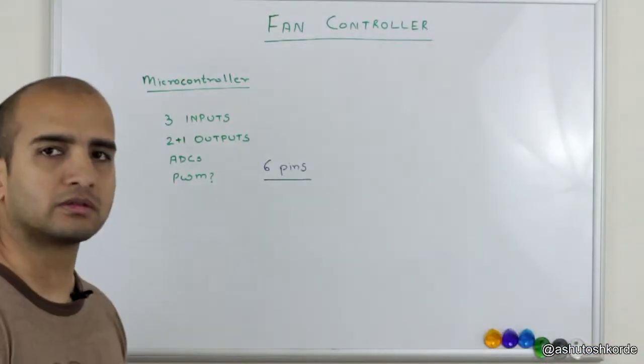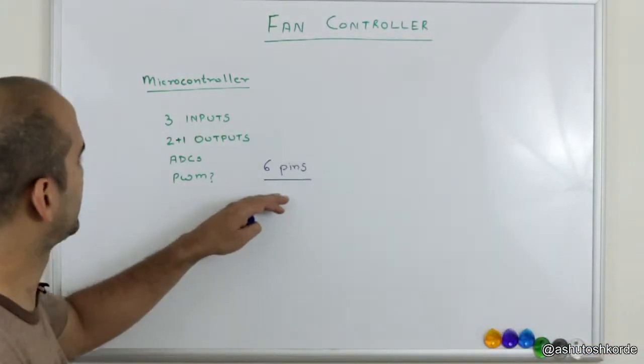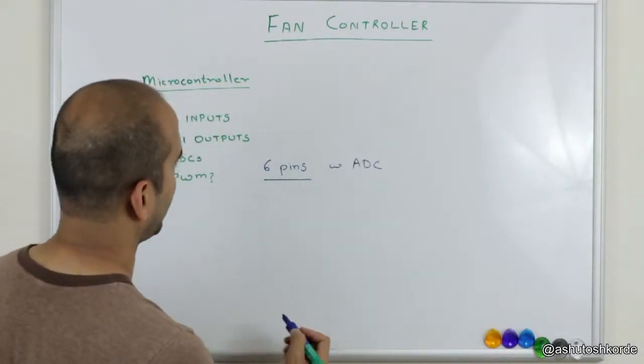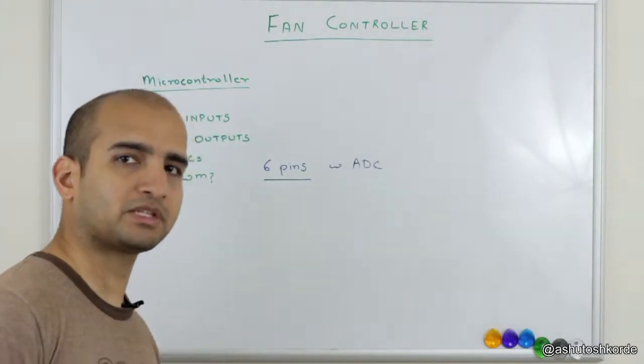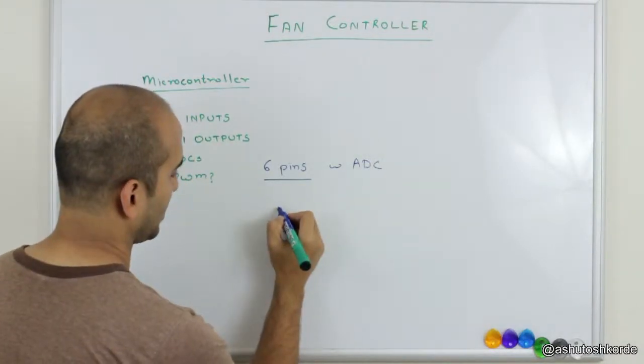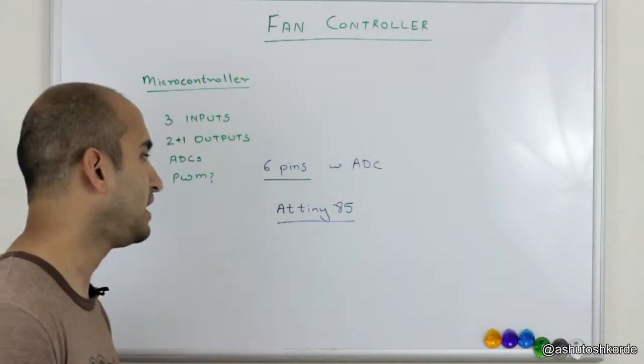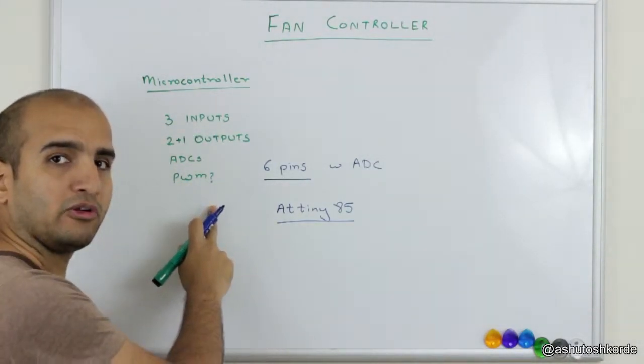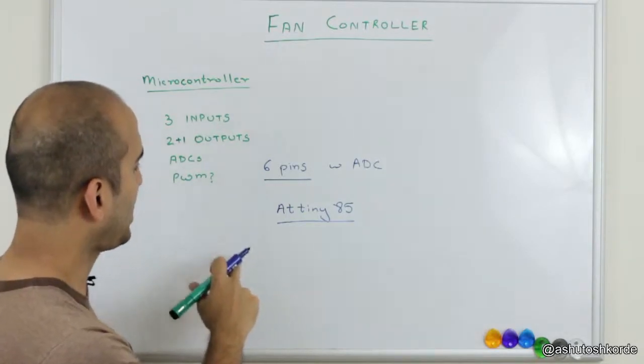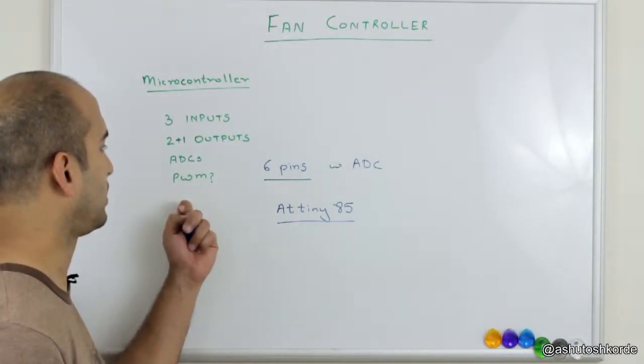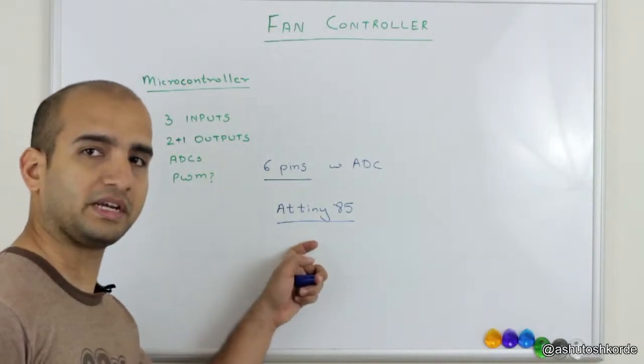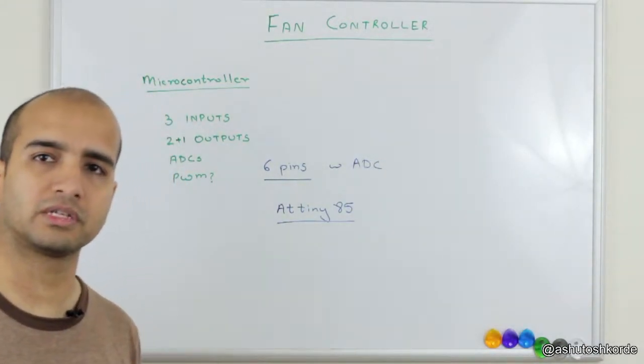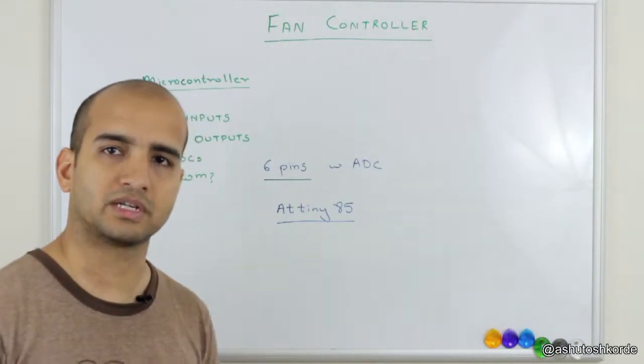Ideally we want the inputs to have ADCs, and if the microcontroller has a PWM it's well and good. So this adds up to six pins with ADC. And the first and the more cheapest choice that we have is we can use an ATtiny85 for this project. Now mind you, the ATtiny85 does not have a PWM, but what we can do is we can simulate a software PWM on this ATtiny. So let's go ahead and draw the schematic for this and let's see how we are going to design this.